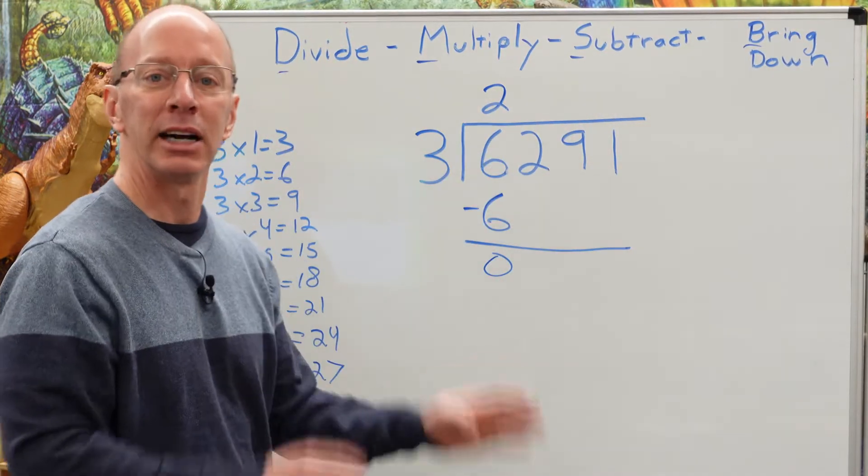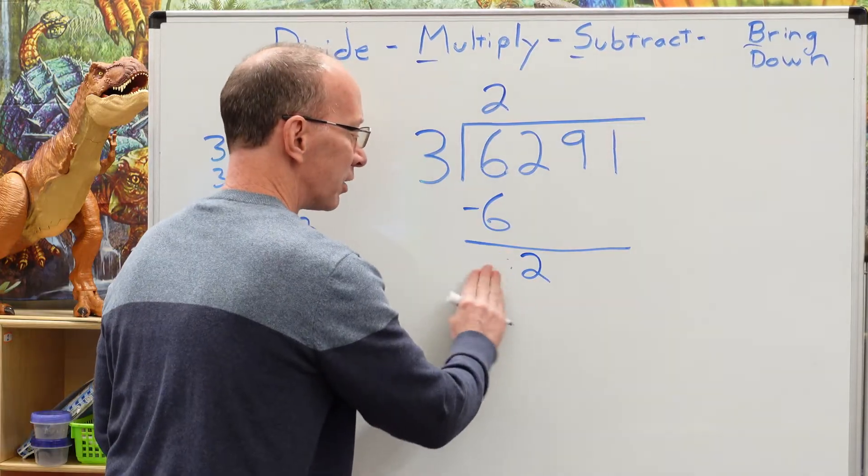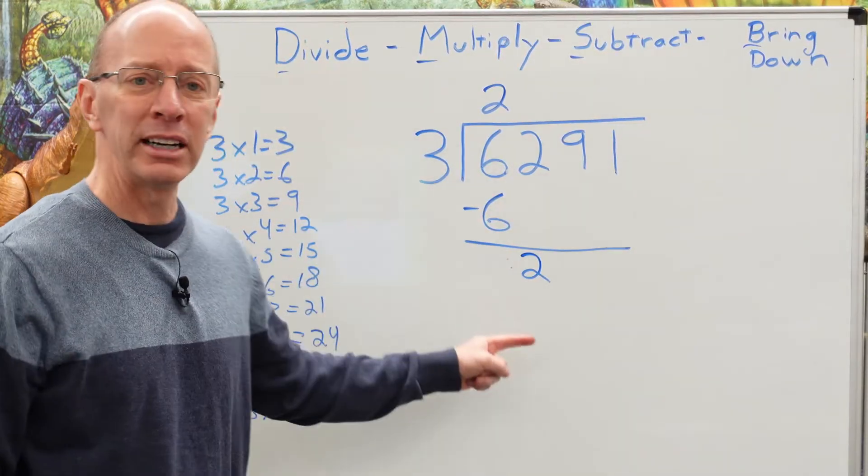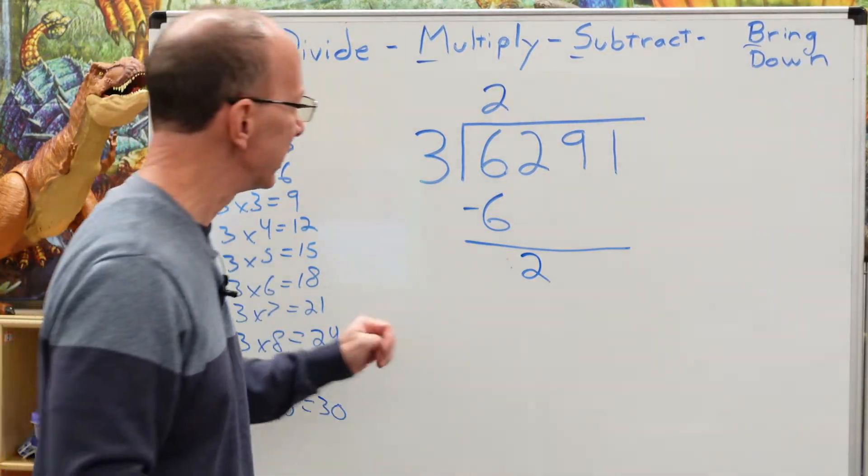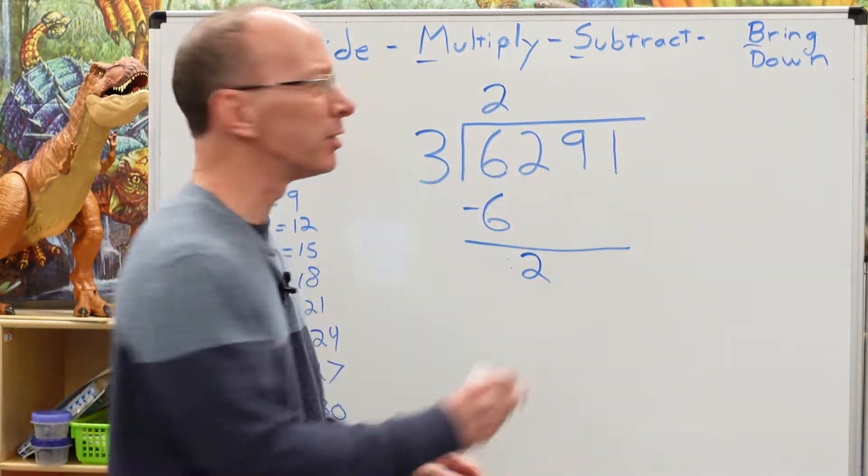Bring that next number down. So I bring this down here. So our two, I don't need that zero right there. Can I put three into two? No, you can't. You cannot do it. It's virtually impossible.